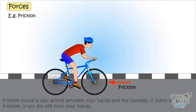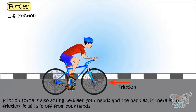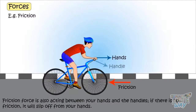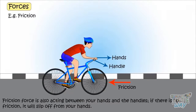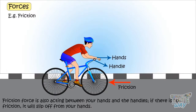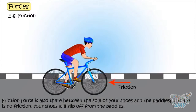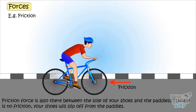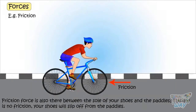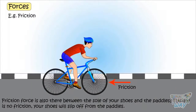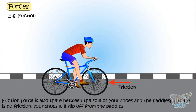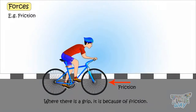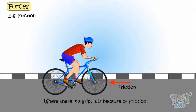Friction force is also acting between your hands and the handles. If there were no friction, the handle would slip off from your hands. Friction force is also there between the sole of your shoes and the paddles. If there were no friction, your shoes would slip off from the paddles. Everywhere where there is a grip, it is because of the friction.